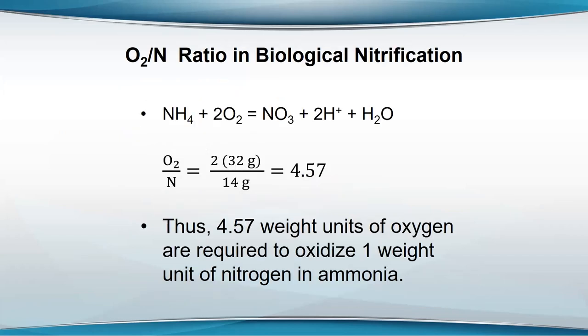For nitrification, the summary equation shows that ammonia plus water — carried out by bacteria — has a ratio of 4.57. So for each unit of nitrogen in ammonia that's nitrified to nitrate, it takes 4.57 units of oxygen.